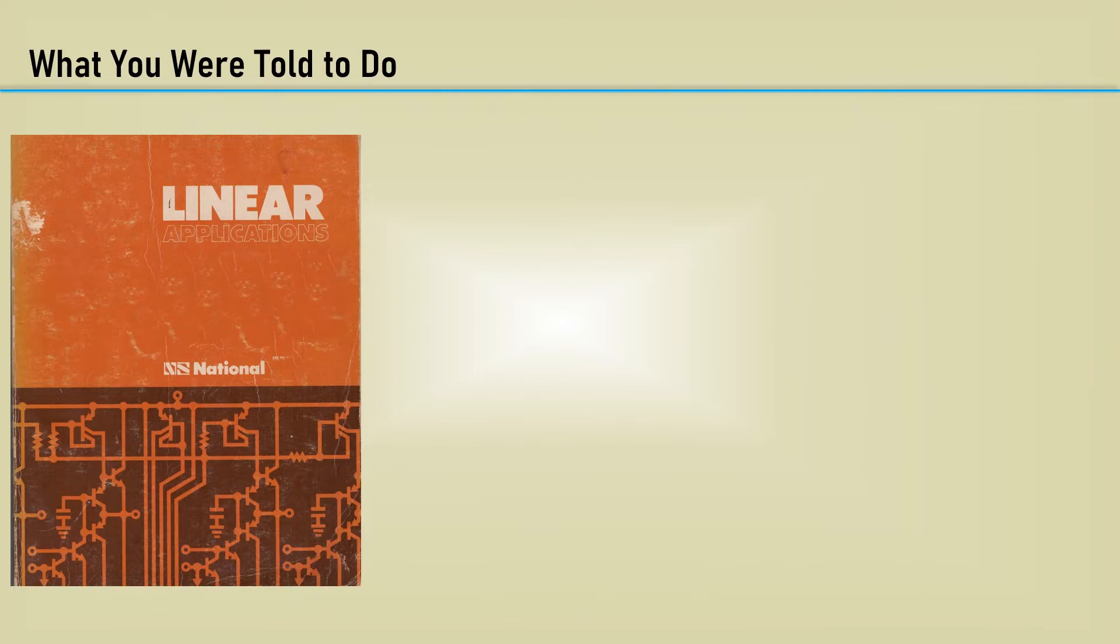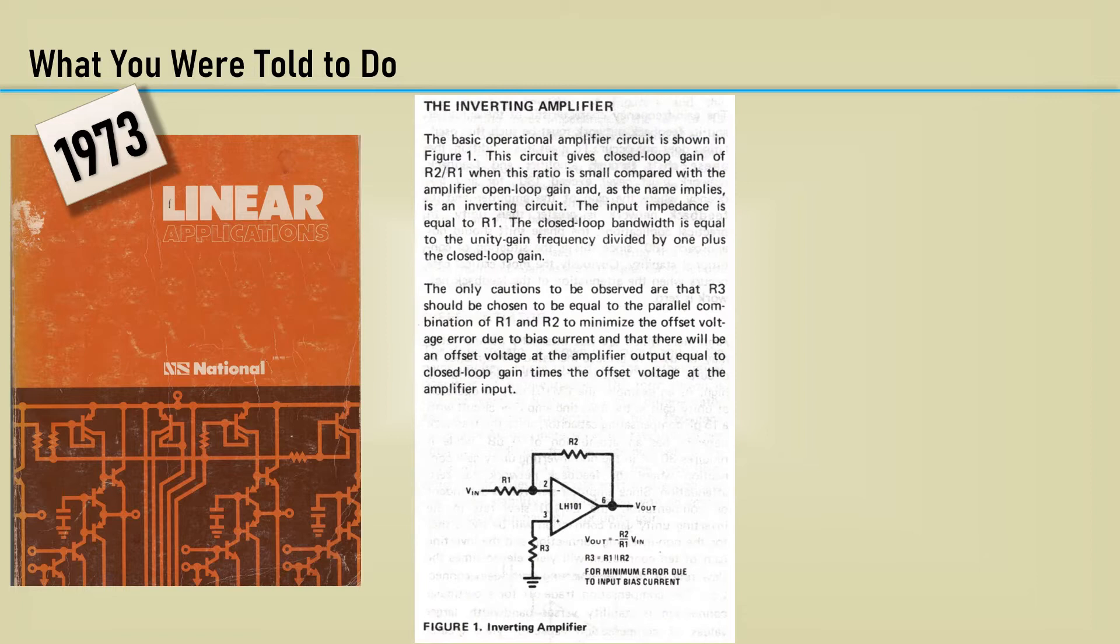National Semiconductor, back in the 1970s, had great op amp product offerings. They also published some linear applications handbooks that had some golden op amp circuits. This is my copy that I used in the 70s. Here is an excerpt from that 1973 linear applications handbook that shows the application of an inverting amplifier. It has the closed loop gain equation like we derived in the earlier op amp abstraction video.